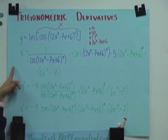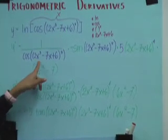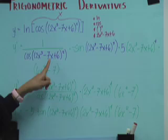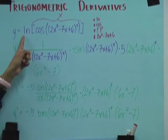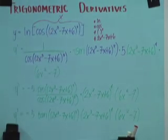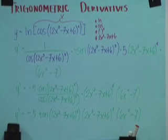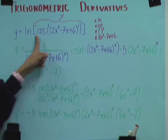y prime equals 1 over cosine(2x³ - 7x + 6)⁵, because the derivative of ln is just 1 over x, and this whole thing is x. It's like 1 over x and then multiply it by the term.